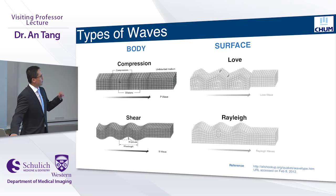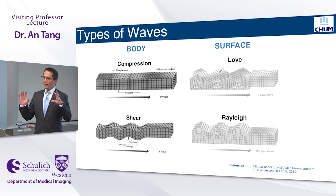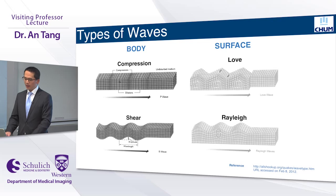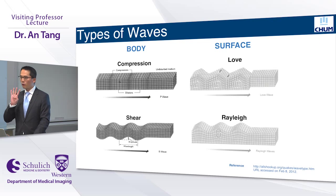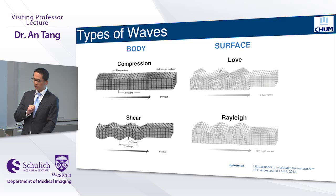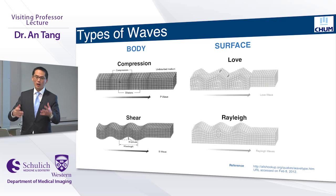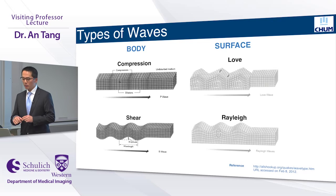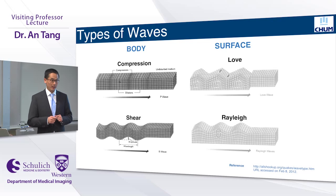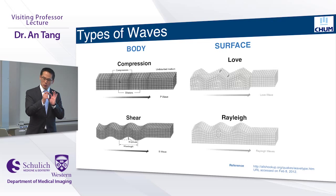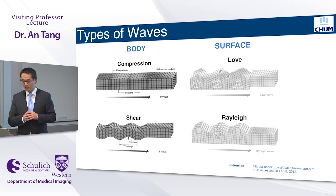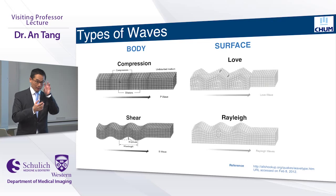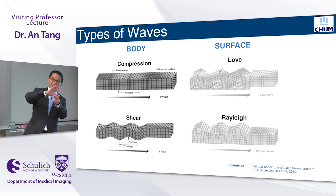Unlike light, mechanical waves travel inside a medium and involve particle motion. There are four types of mechanical waves, two of which travel inside tissues — known as body waves. In medical imaging, we use either compression waves or shear waves. For compression waves, the particle motion travels in the same direction as the wave itself. Imagine holding a slinky toy — if you tap one end, the rings jiggle and travel toward you. These compression waves travel rapidly.